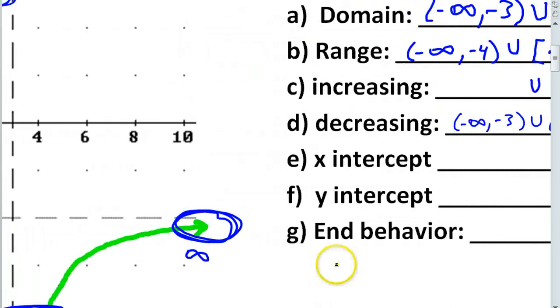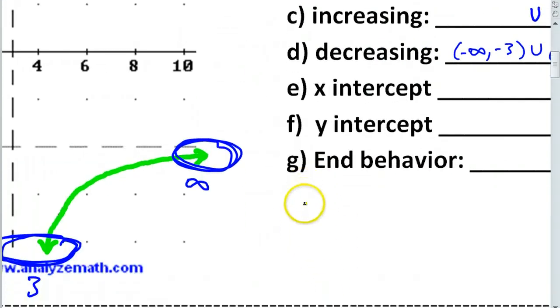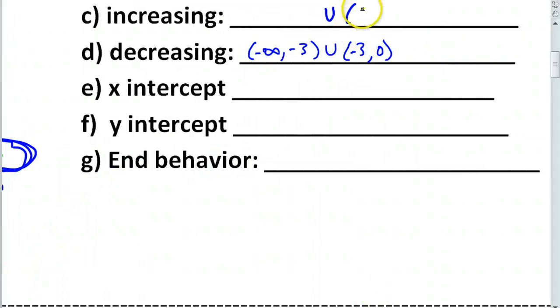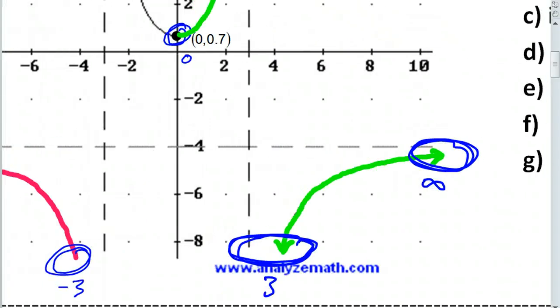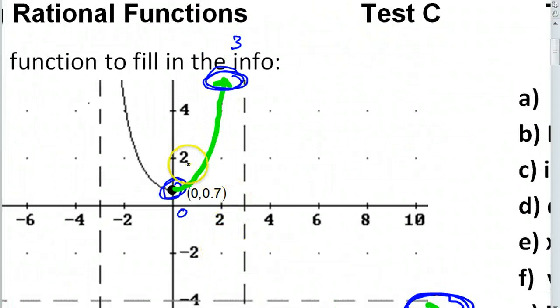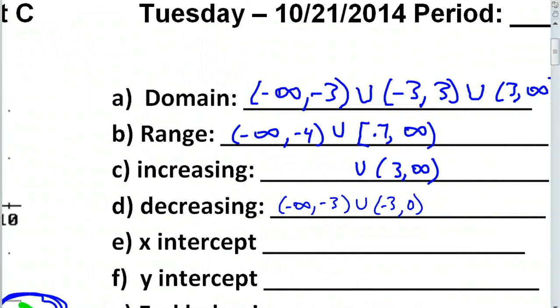Wait. Did I not write down my other increasing interval? Oh, man. Got to go back. So, we have an increasing interval from three to infinity. Apparently, I didn't write down my other one. Okay. And this increasing interval was from zero to three. Okay. Any questions so far?